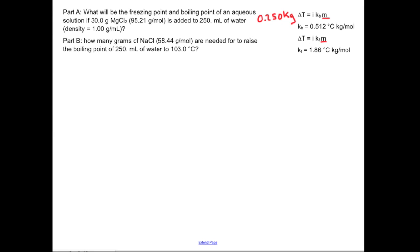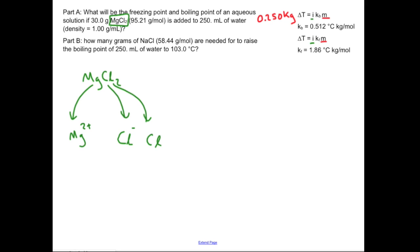The other thing to remember is this little i — that's called the van't Hoff factor. It's a reminder: don't forget that when you put magnesium chloride into solution, it's going to dissociate into magnesium 2+ and, because of the 2 in the empirical formula, you're going to get two chloride minus ions. So a 1 molal solution of magnesium chloride gives you a 3 molal solution of ions, because you get 1, 2, 3 particles.